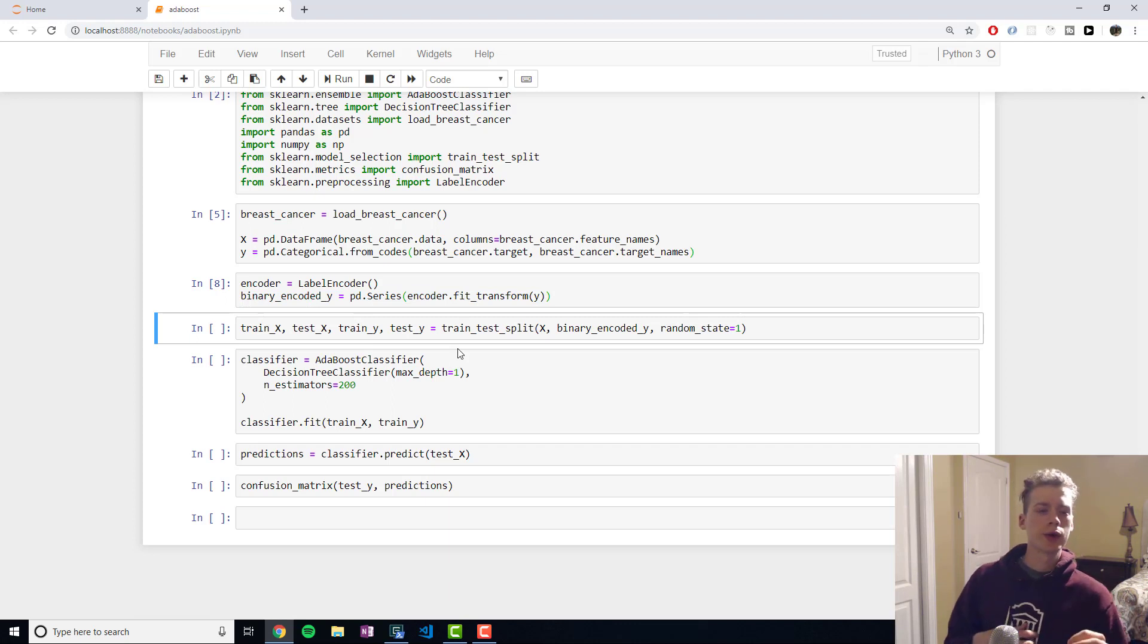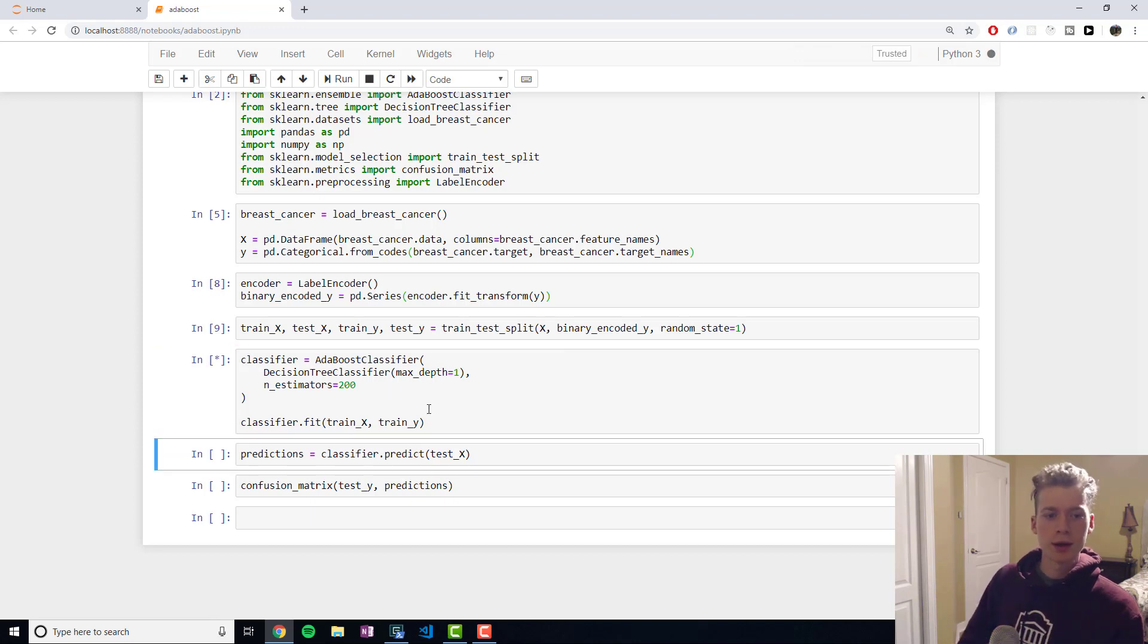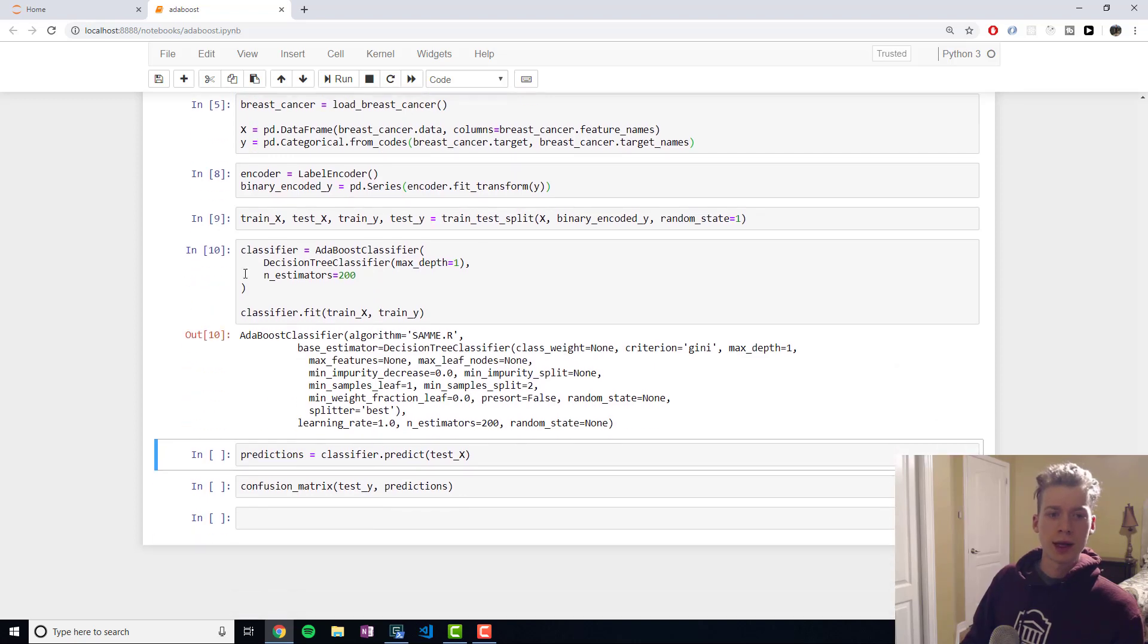The next thing we're going to do is we're going to split the dataset into a training and test set. Then we're going to build and fit our model. Like I mentioned previously, n_estimators refers to the number of trees in the forest or ensemble, and then the max depth of the tree here is one. Now that's trained, we can go ahead and predict the values for the samples in the test set.